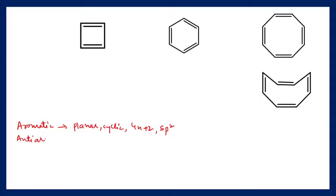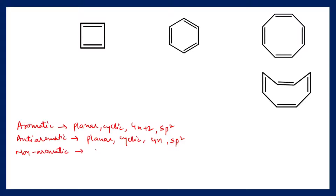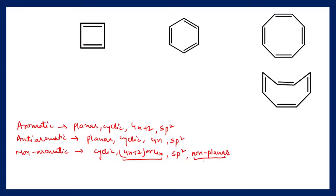For anti-aromatic compounds, the compound should be planar, cyclic, follow the 4n pi electrons rule, and the carbon atoms should be sp2 hybridized. For non-aromatic compounds, the compound should be cyclic and all carbon atoms sp2 hybridized, but the compound will be non-planar in nature. So a non-aromatic compound may violate either the 4n or 4n+2 rule, or it may be non-planar. Most commonly, non-aromatic compounds are non-planar.